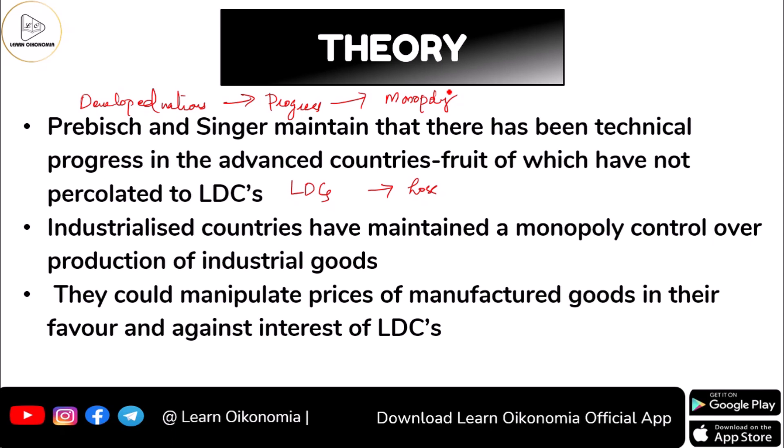Industrialized nations had a monopoly over manufactured commodities, controlling production and manipulating prices to make the terms of trade move in their favor. When the terms of trade moved in favor of advanced nations, it moved against the interests of LDCs, creating a deteriorating effect on them.